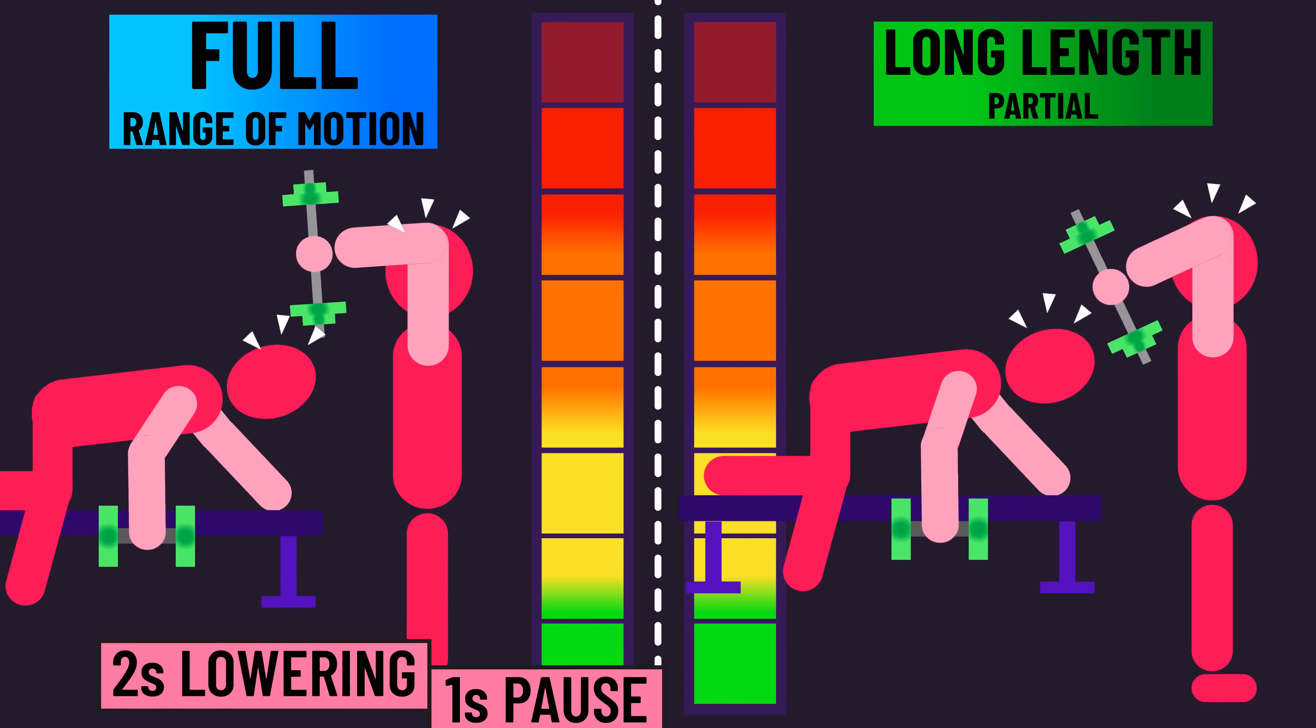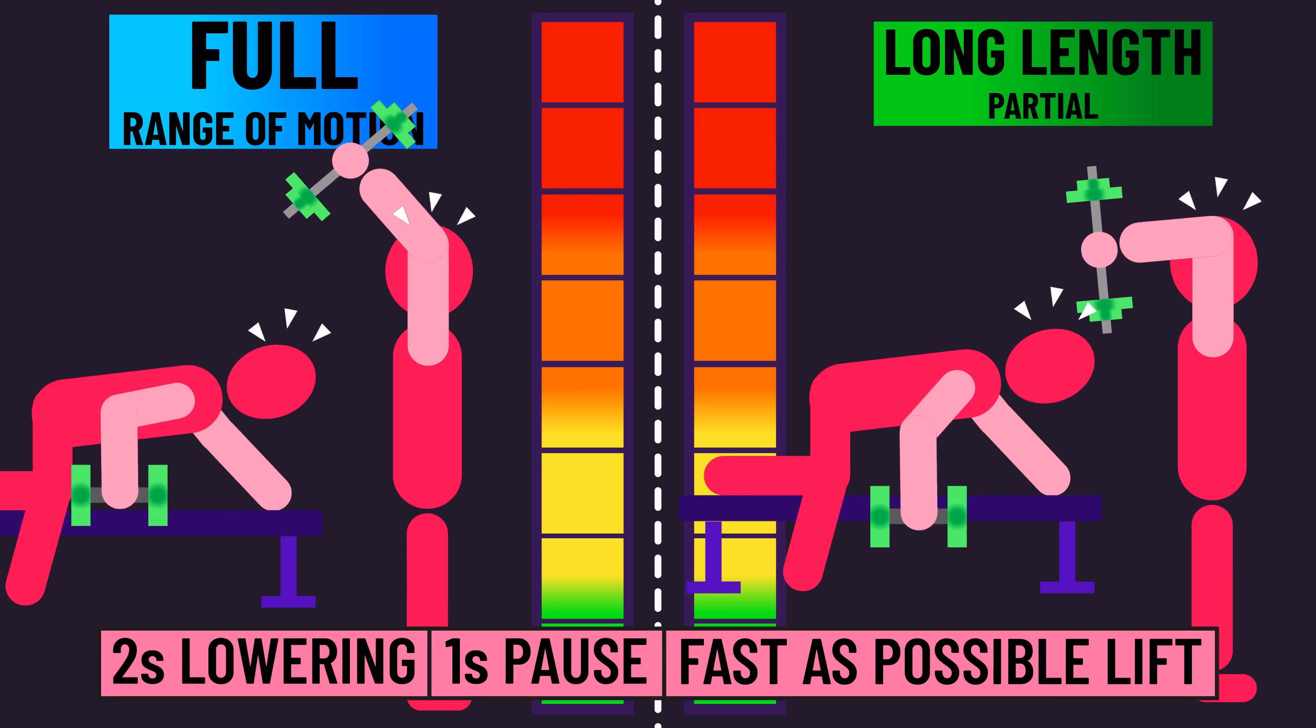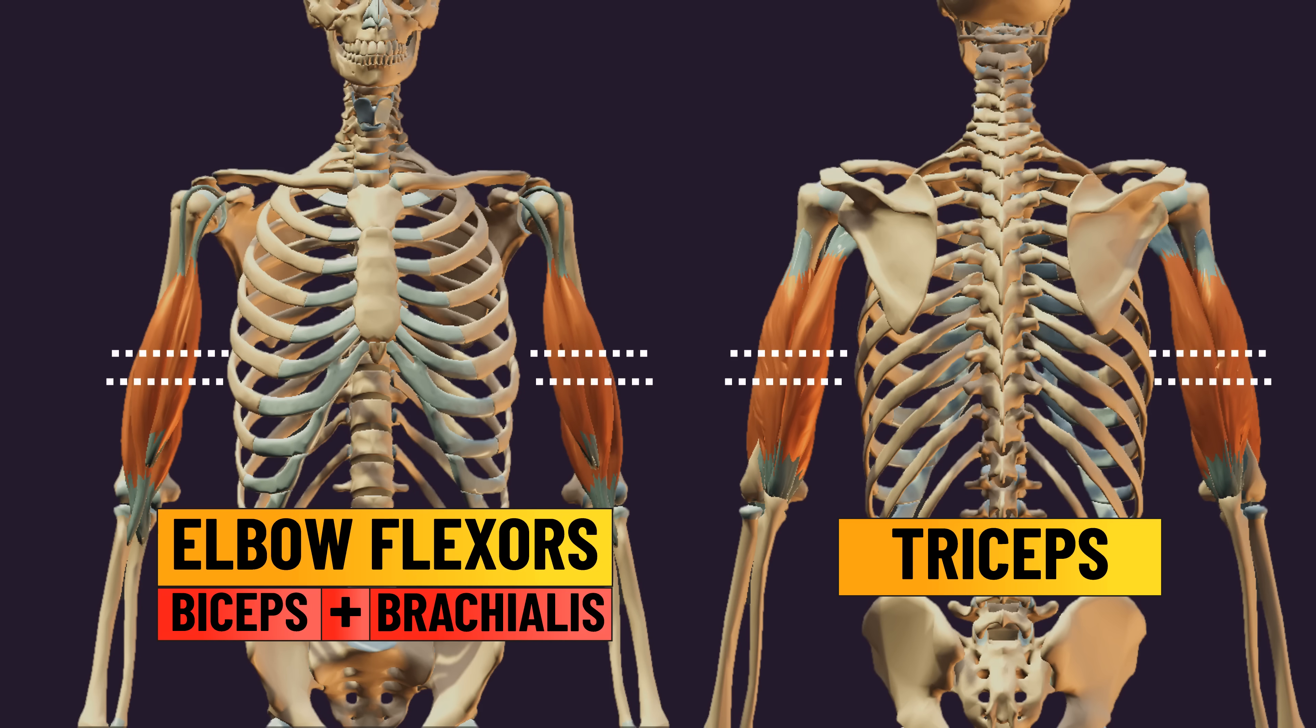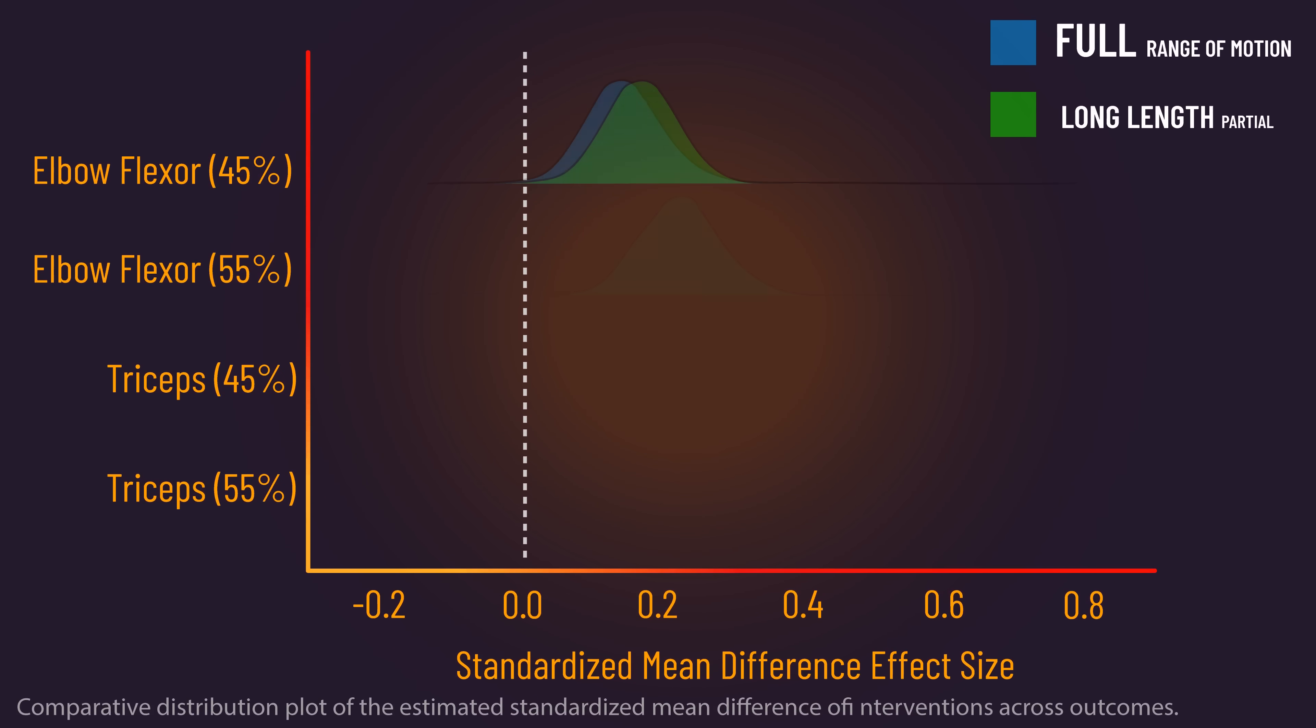Both sides trained to momentary failure with a defined range of motion. Muscle thickness of both the elbow flexors and triceps was measured at 45 and 55 percent of the humeral bone length. It was ultimately found growth at all regions was similar between both types of training.